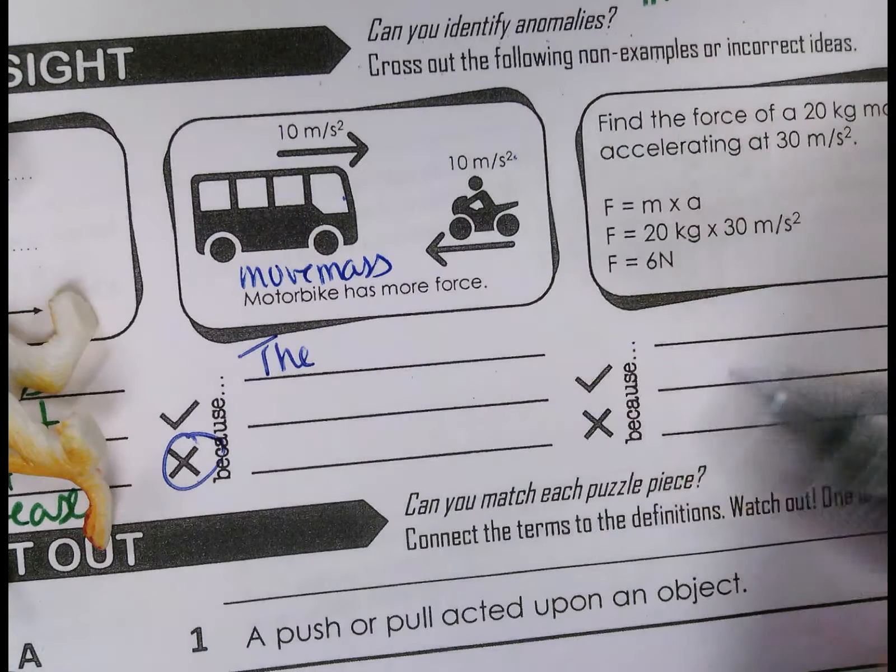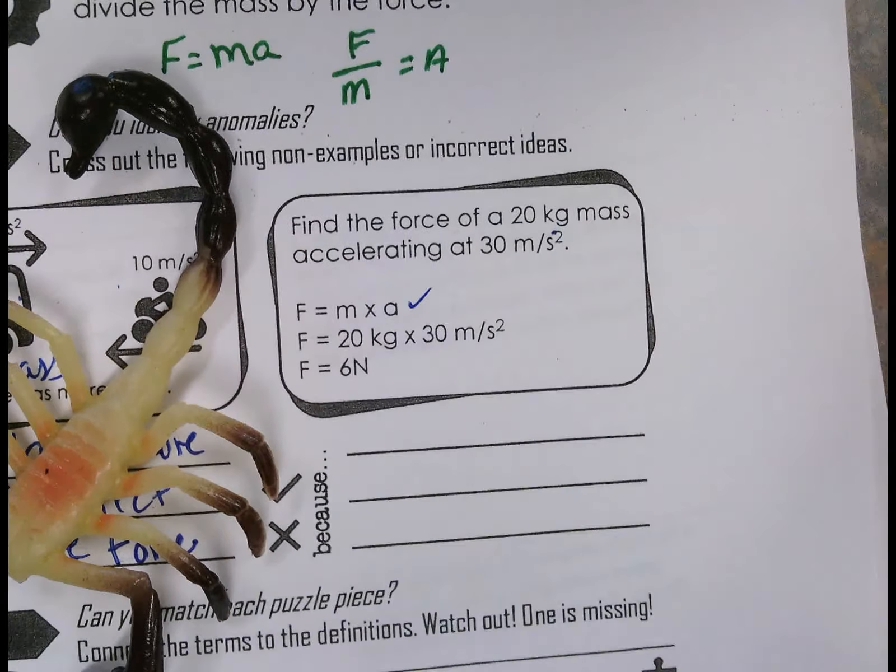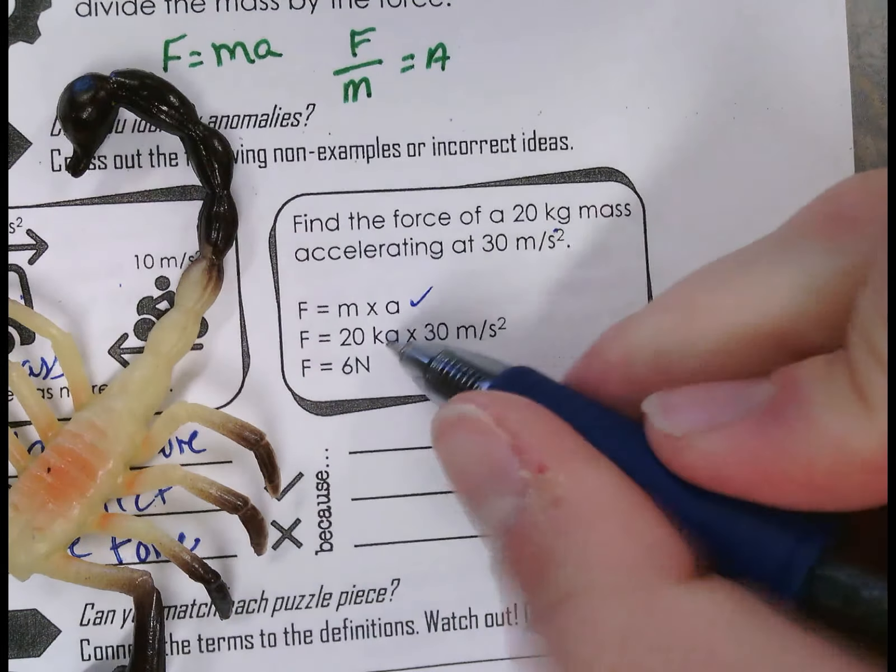All right. The last question, little question. Find the force of a 20 kilogram mass running at 30 meters per second squared. So if I'm looking at this force, we're solving for force. We know that this is the correct application. So mass 20 times 30. Hopefully you realize that is not six. So this is false. So this would be 20 times 30 equals 600 newtons.